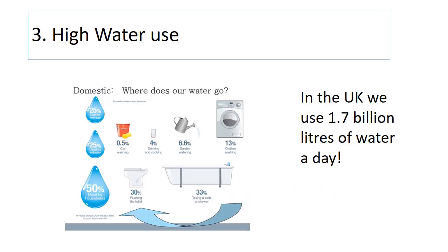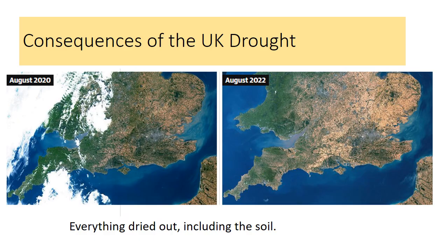Thirdly, in the UK we use lots of water — 1.7 billion litres of water a day. And so these causes meant that there was a serious drought in the UK.